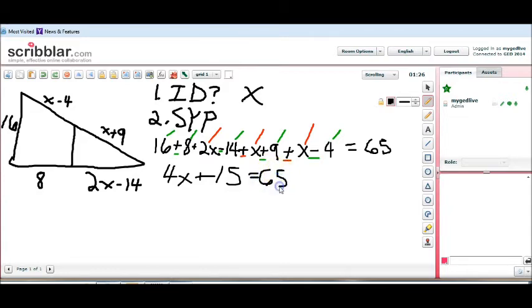We have 4X plus 15 equals 65. Now, I have a patented method that I always talk about called the COPA method. That's C-O-P-A. C stands for combine like terms. O stands for doing the opposite. P stands for perform the operations. And A, get your answer. This is a way that you can use to solve algebraic equations.